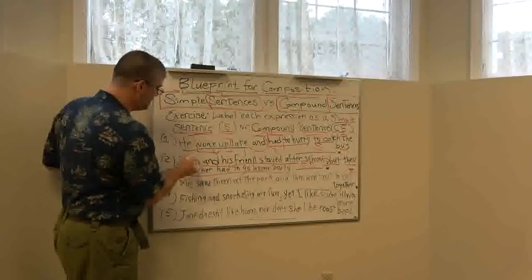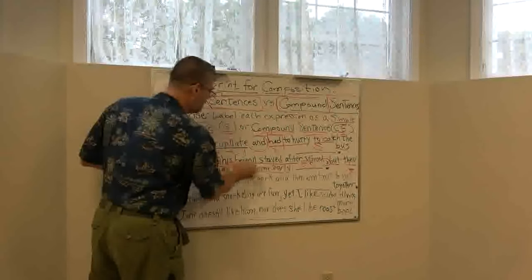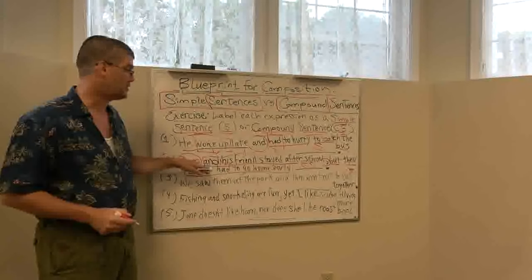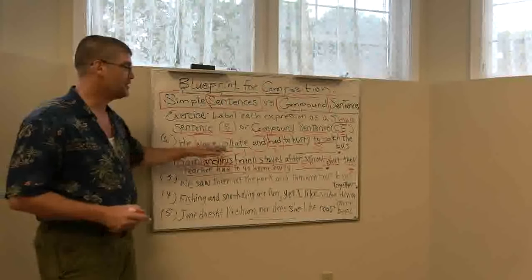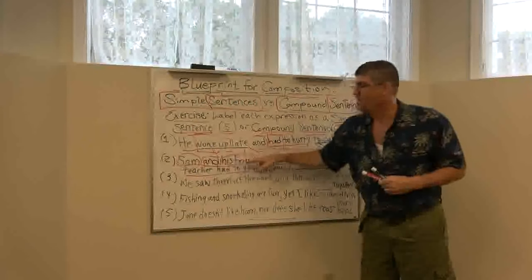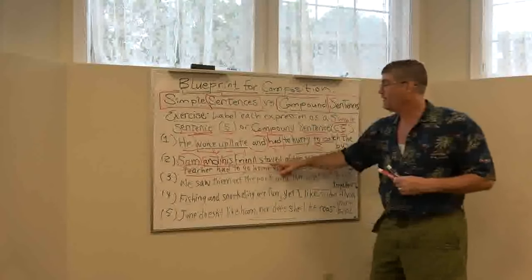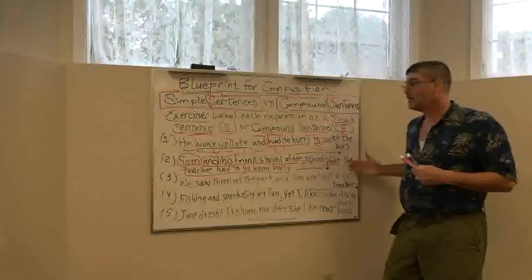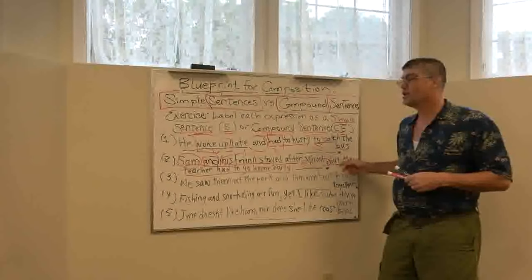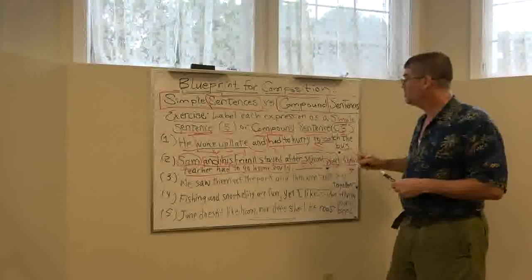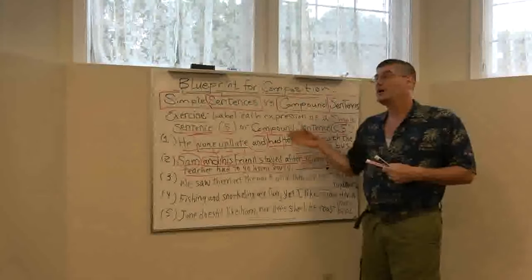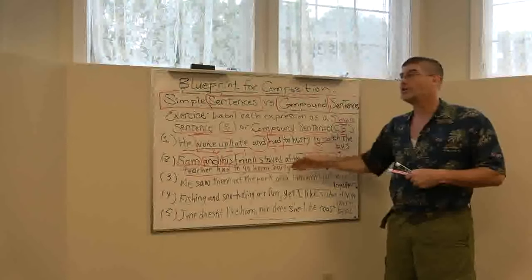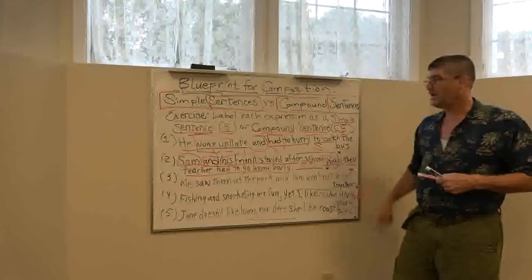Sam and his friend — as we talked about in the previous video — is an example of a compound subject. It's joining two nouns: Sam and his friend. So together this is one compound subject. I have a verb: stayed. In the other part of the sentence, after the word but, I have another subject — teacher — and I have a verb — had. So is it a complete idea? Yes and yes. Therefore: comma, conjunction, necessary. I'm using but to show contrast. It fulfills all the requirements of a compound sentence. Therefore, CS.